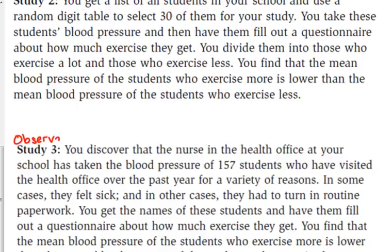We're going to go over this next part together. If you look at question two, it says: in each study in problem one there was an association between amount of exercise and blood pressure. Assume that in each case the difference in mean blood pressure was statistically significant. Answer the following questions for each study. Question A says: is it reasonable to conclude that it was the exercise that caused the lower blood pressure?